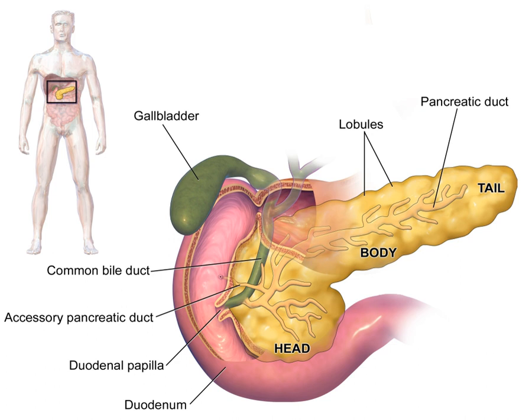As part of embryonic development, the pancreas forms as two buds from the foregut, an embryonic tube that is a precursor to the gastrointestinal tract. It is therefore of endodermal origin. Pancreatic development begins with the formation of a dorsal and ventral pancreatic bud, each joining with the foregut through a duct. The dorsal pancreatic bud forms the neck, body, and tail of the developed pancreas, whereas the ventral pancreatic bud forms the head and uncinate process.